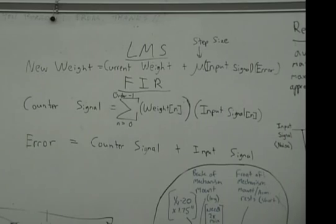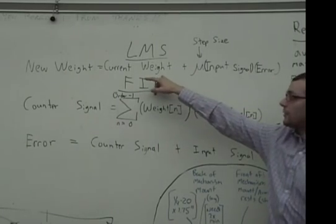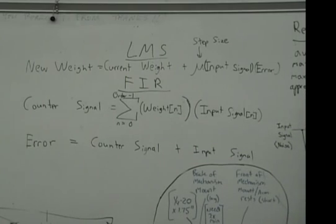The error here, as soon as the error gets minimized, the ideal case would be the error would go to zero. At that point, the weights would end up just being equal to their previous values, and the system would become stable, and then we'd have our 180 degrees shifted counter tone.